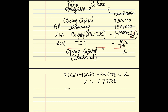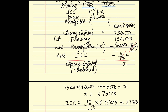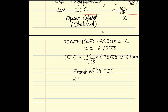IOC will be 10% of 6,75,000, which equals 67,500. So we have calculated the total IOC. Now, profit after IOC = 2,25,000 − 67,500 = 1,57,500.